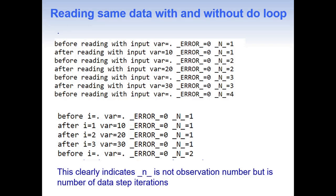Whenever we process data not in a DO loop, data is written back to the SAS data set for each iteration. With a DO loop, that is not the case. When dealing with large data sets, it is often more efficient to process data in a DO loop because we are not writing data back to the data set for each iteration — this decreases a lot of overhead. That's all for this topic. If you liked it, please give it a thumbs up, share, and subscribe. Thank you.